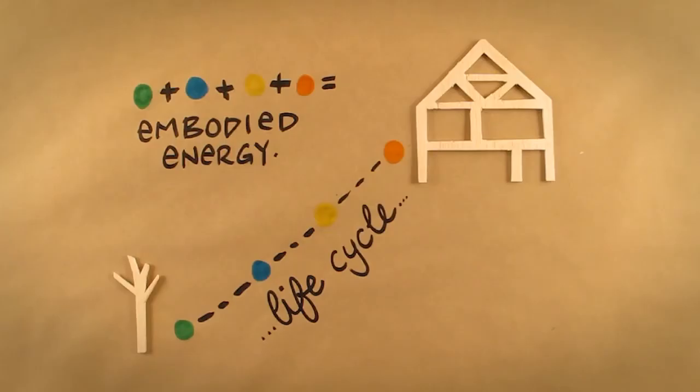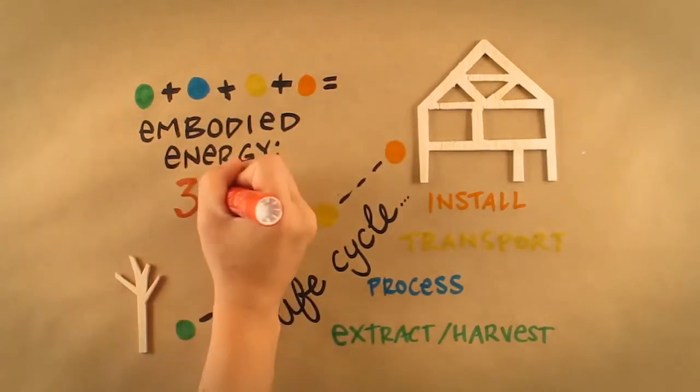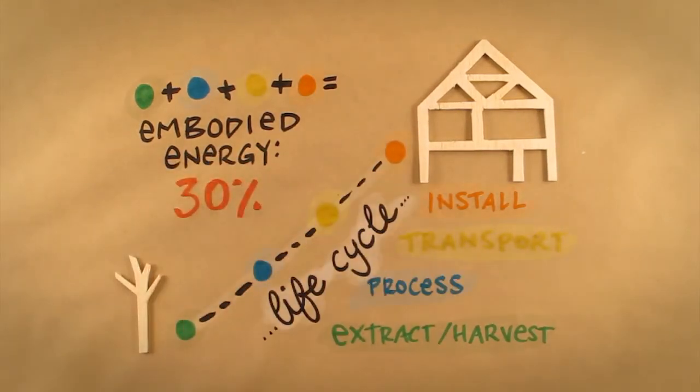With this in mind, it has been estimated that the amount of energy required to extract or harvest, process, transport and install natural resources into building materials is around 30% of the overall life cycle energy. This 30% is otherwise known as the embodied energy.